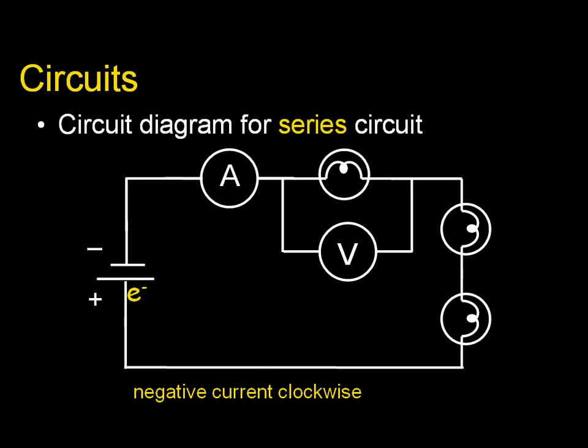Negative current would flow clockwise. But as I discussed in class, we don't like to represent current as a negative value. So we say positive current is counter-clockwise. The flow of current is always opposite direction of the direction that an electron would move. Because the electron is negative, that reverses the direction.